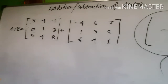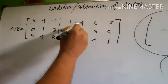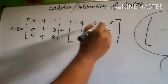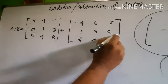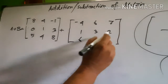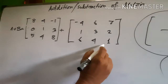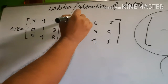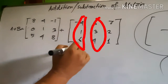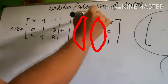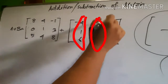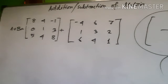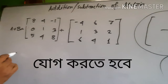Similarly, for matrix B: first row, second row, and third row. And as usual, first column, second column, and third column. Now we will do addition. Please be attentive to this.